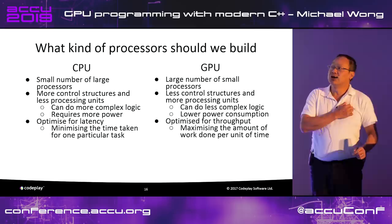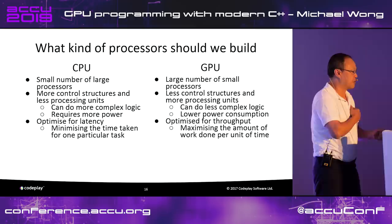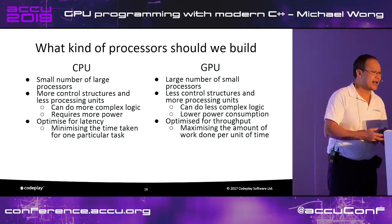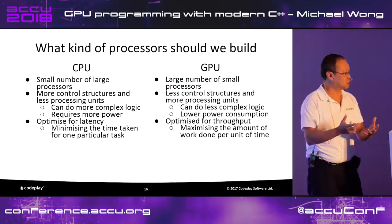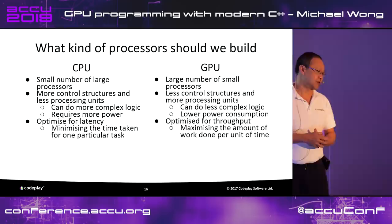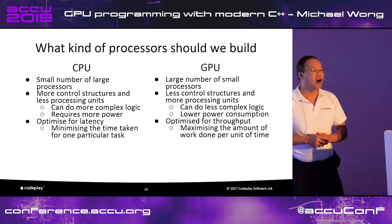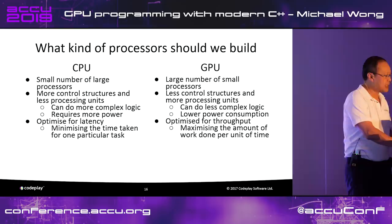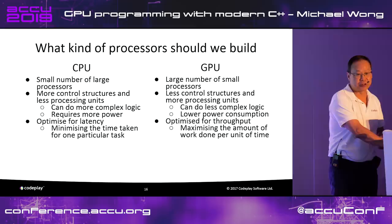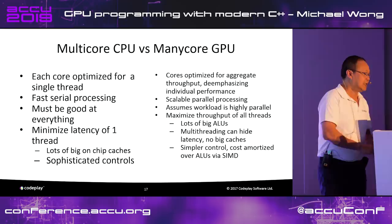When looking at what kind of processor to build, CPUs and GPUs aim for different things. CPUs have a small number of large processors, more control, less raw processing, require more power, and are optimized for latency. GPUs have large numbers of small processors, less control, much more processing, require less power, and are optimized purely for throughput. They especially optimize for SIMD-style computation — single instruction, multiple data — and almost all have some sort of vector processing unit.